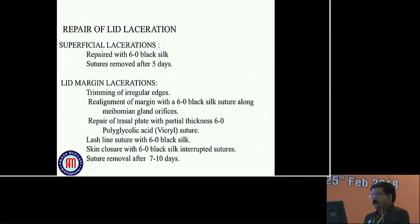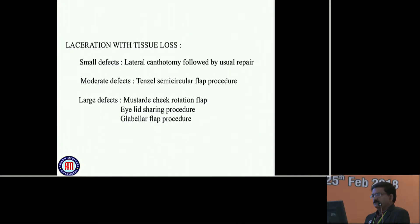Superficial laceration is repaired with 6-0 black silk suture, removed after 5 days. For eyelid margin laceration, trimming of irregular edges, realignment of margin with 6-0 black silk suture along with meibomian gland orifices. Repair of tarsal plates with partial thickness 6-0 polyglactin (Vicryl) suture. Lash line suture with 6-0 black silk. Skin closure with 6-0 black silk with interrupted sutures. Suture removal after 7 to 10 days.